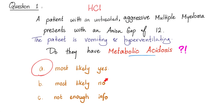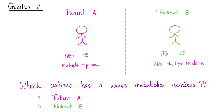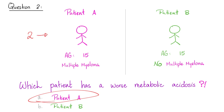A competent physician will figure out the diagnosis in a second; a doofus will waste time ordering every lab test. Question two: patient A with multiple myeloma and patient B without, both with the same anion gap — patient A has a worse metabolic acidosis. Because multiple myeloma usually decreases the anion gap, if patient A's anion gap was 2 before and is now 15, that means way more unmeasured anions were added compared to patient B whose baseline anion gap was about 12.